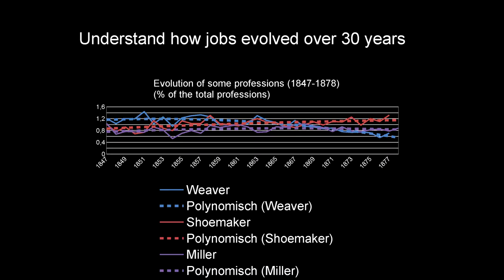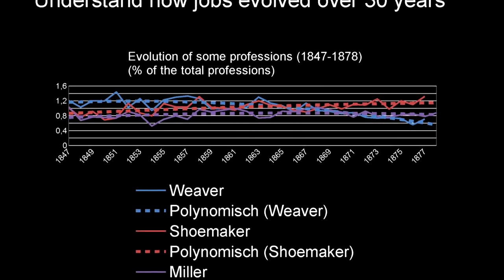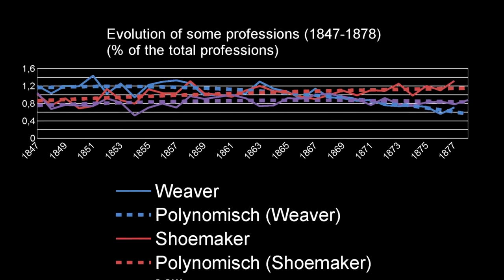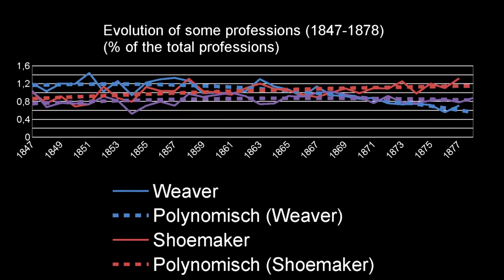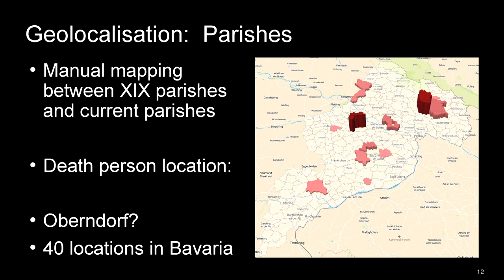Once you have this, you can easily compute the evolution of some professions over the period. You see that the weaver profession — the dotted line is the interpolation of the values — is decreasing, while the shoemaker profession in red is increasing, and the miller profession is quite stable. This is the kind of information you can now automatically extract from the database to see temporal evolution.